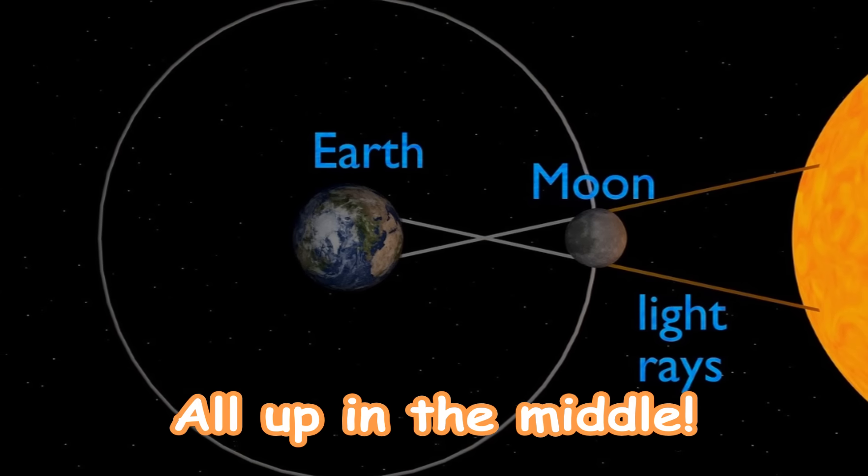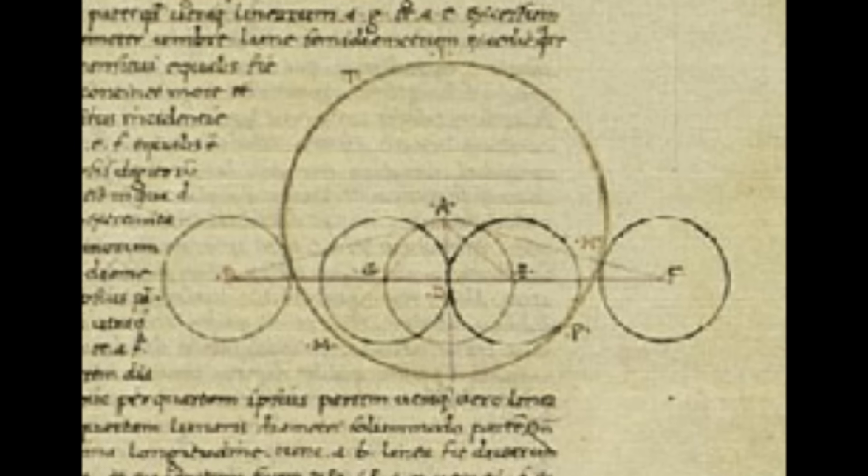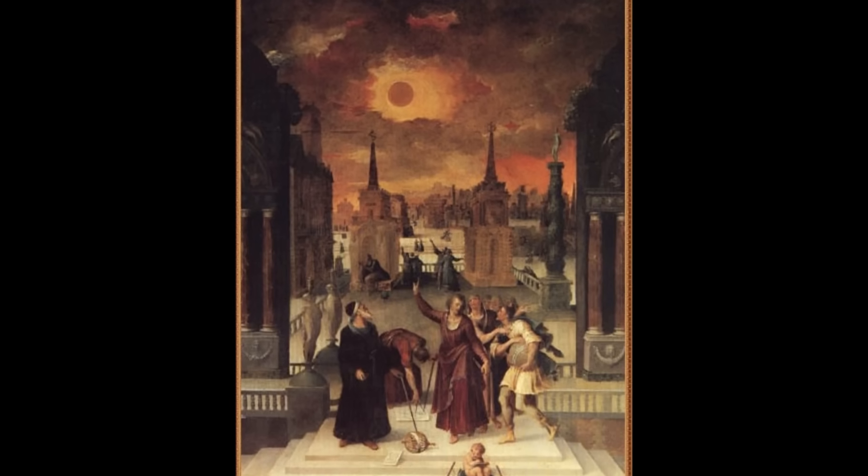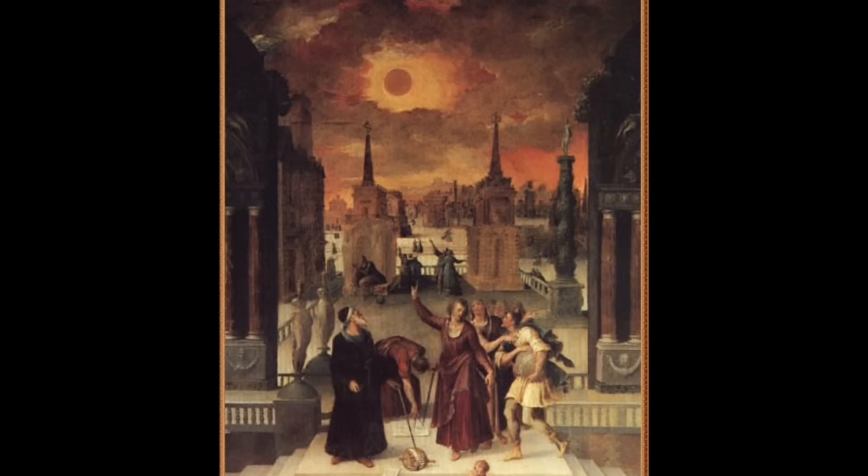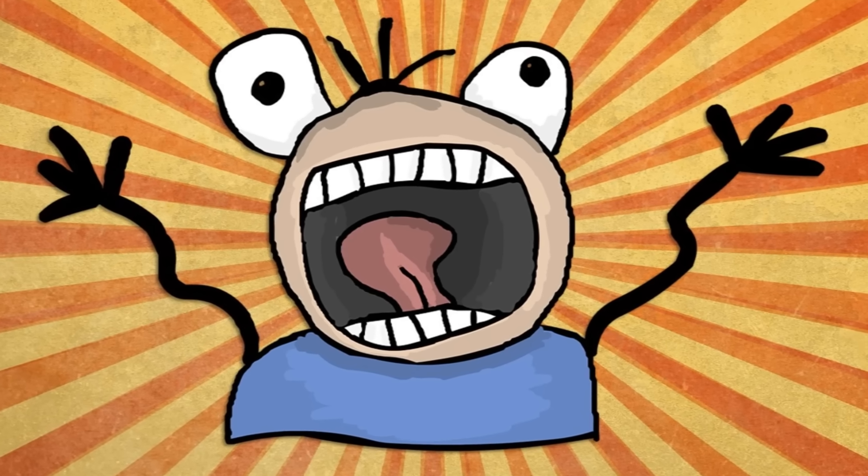the sun, all up in the middle. Eclipses have been going on a really long time. Before science came along, it used to blow people's minds. They would freak out and think that the world was gonna end.